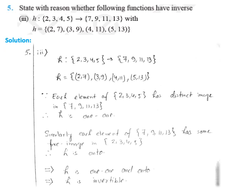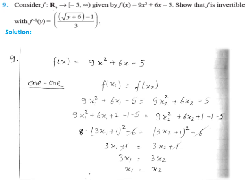Coming to question 9. Questions 6, 7, 8, and 9 are all of the same type. Question 9 is very important — a 4-mark question. Consider f from ℝ⁺ (positive real numbers) to [−5, ∞), given by f(x) = 9x² + 6x − 5. We have to show that f is invertible, with f⁻¹(y) equal to the given expression. First we need to show f is invertible, and second, prove what f⁻¹ equals. To show invertibility, we prove f is one-one and onto.